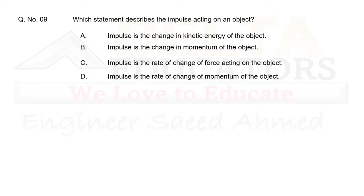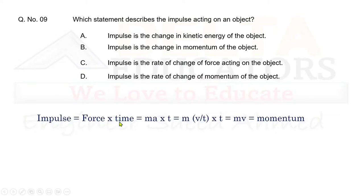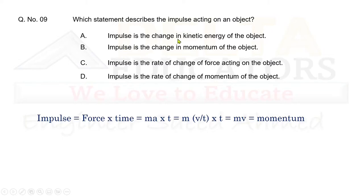Question 9: Which statement describes the impulse acting on an object? Impulse equals force × time. Force equals mass × acceleration, and acceleration equals Δv/t, so the t's cancel to give impulse = mv, which is change in momentum. Option A says impulse is a change in kinetic energy — incorrect. Option B says impulse is the change in momentum — correct. Correct option is B.